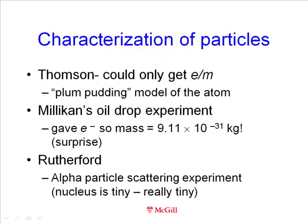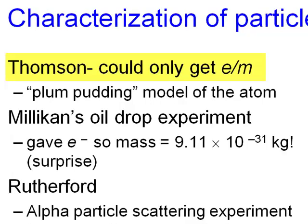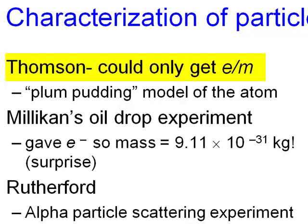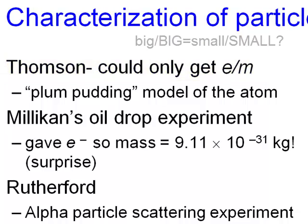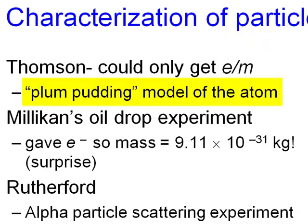Although J.J. Thompson characterized the particles in the cathode ray tube, he could only get the charge-to-mass ratio, E over M. Was the mass and charge both very big, or were they both very small? No one knew. So Thompson first suggested that electrons were uniformly distributed throughout the atom. This plum pudding model was incorrect.